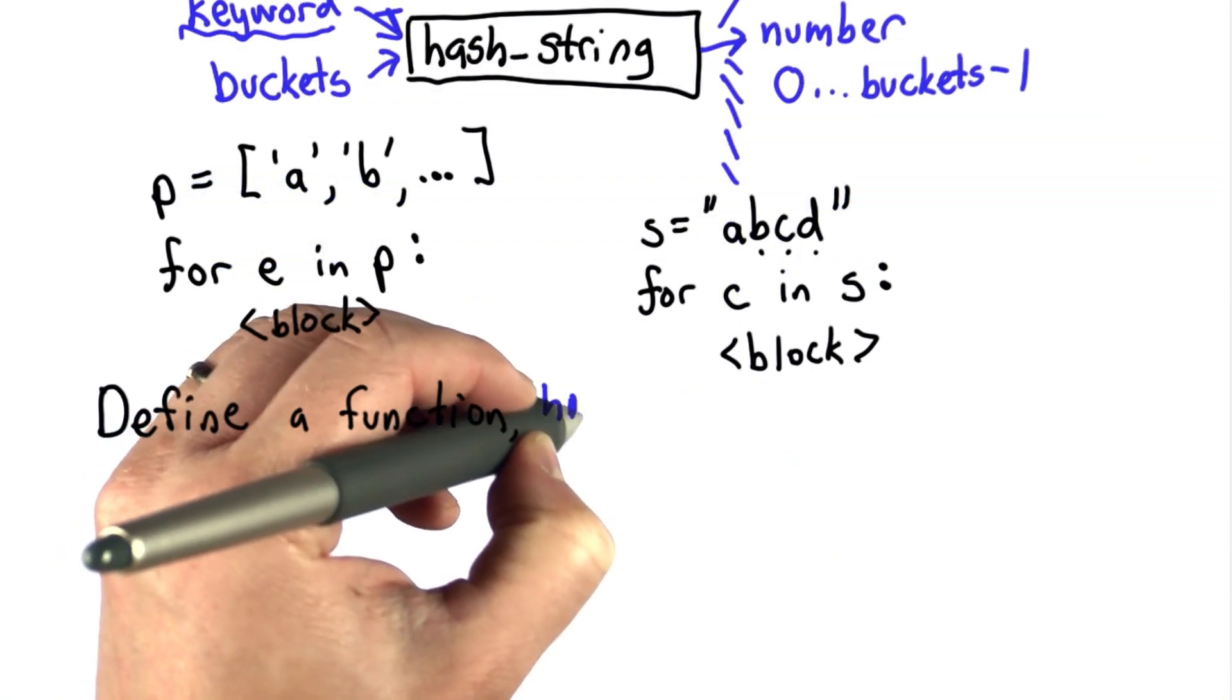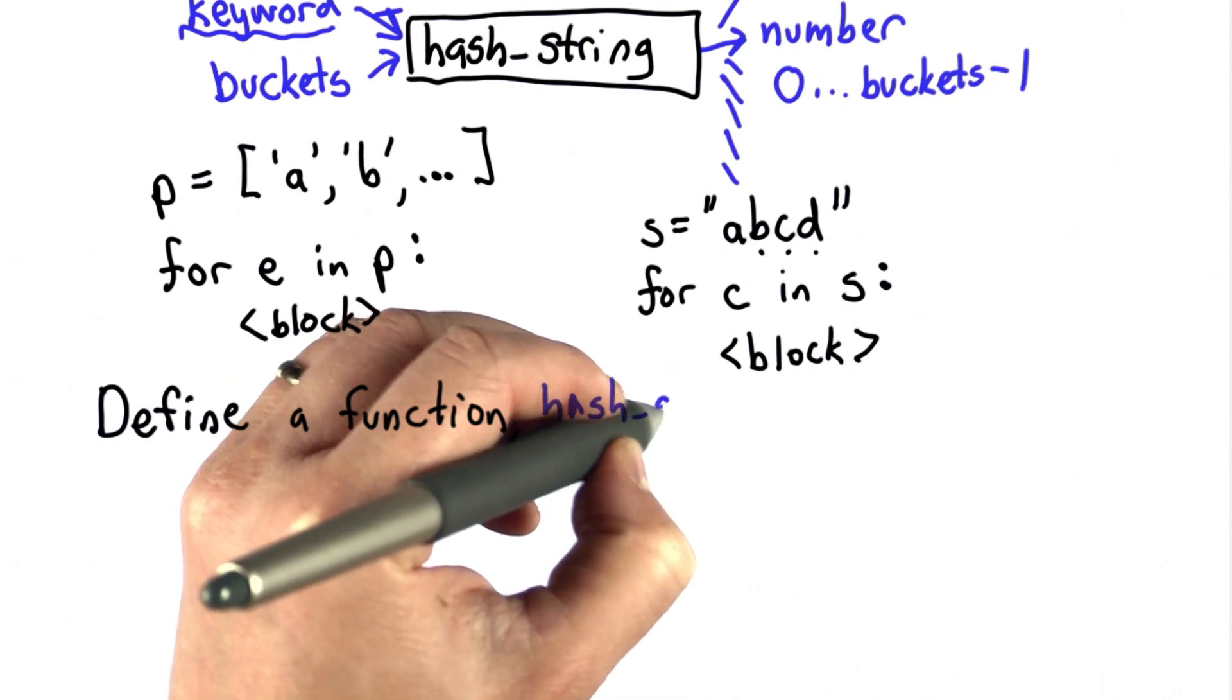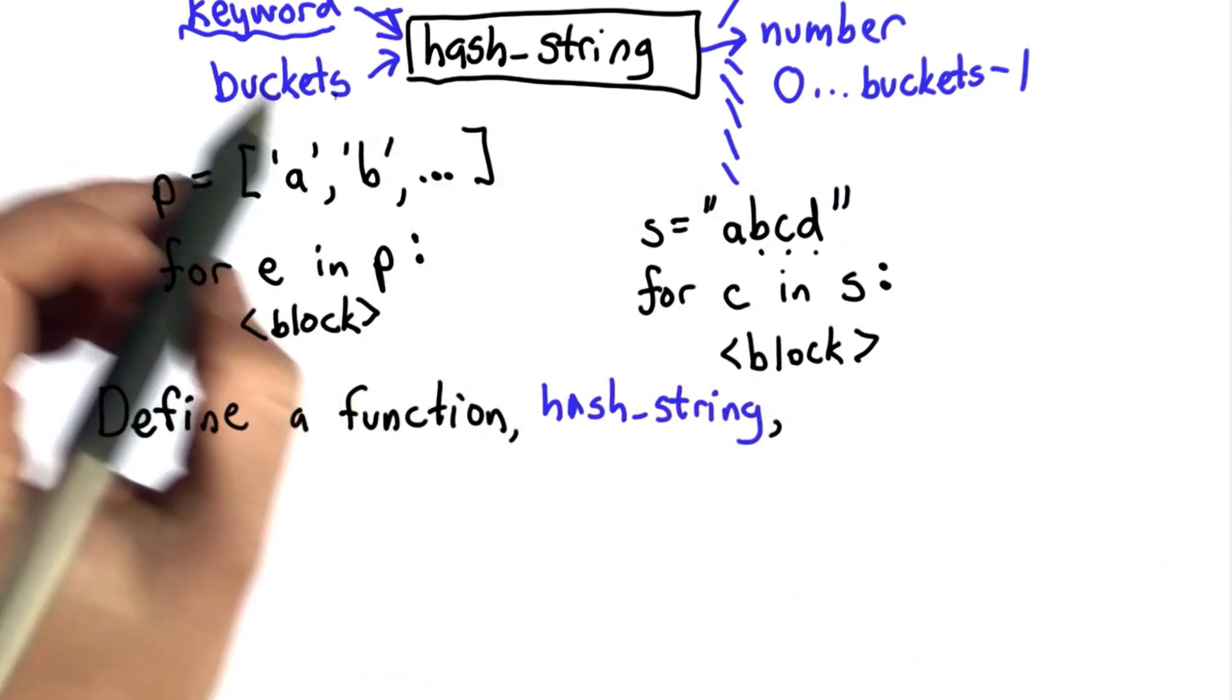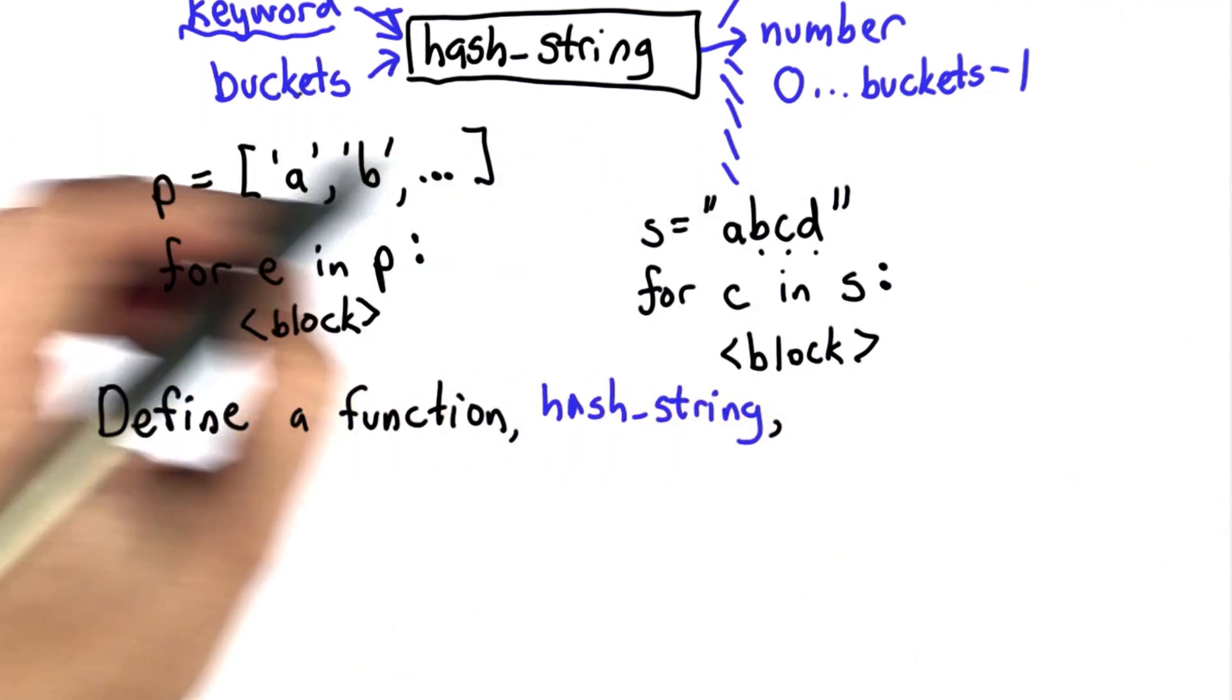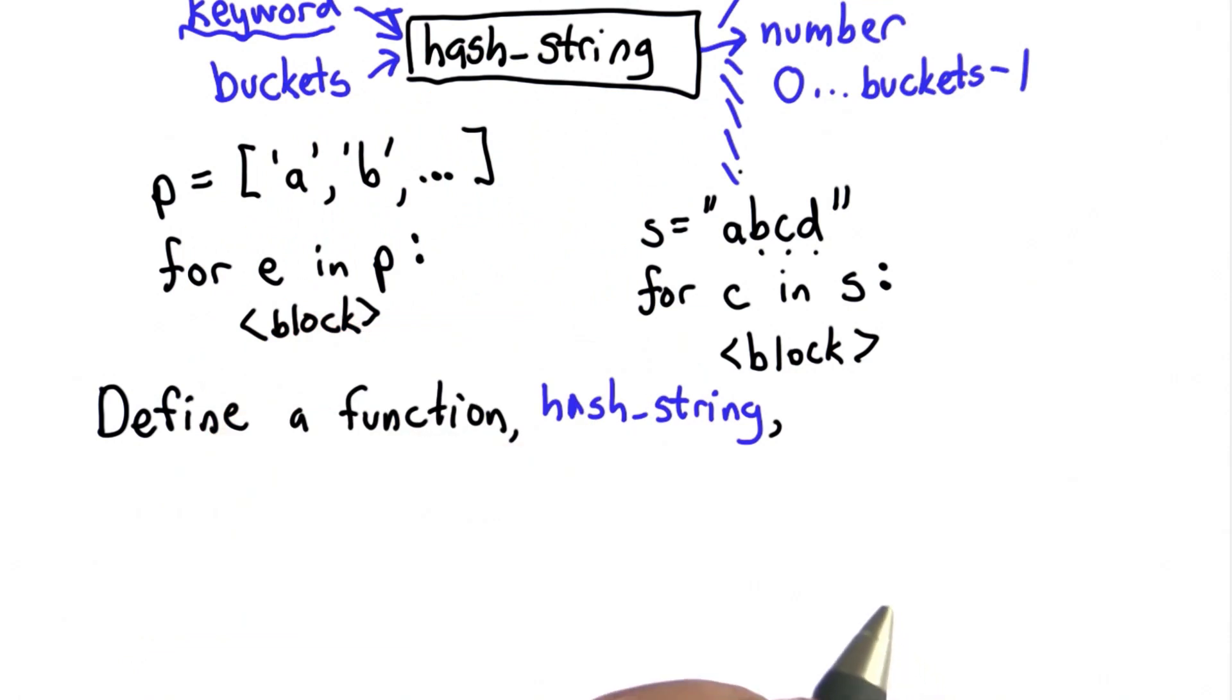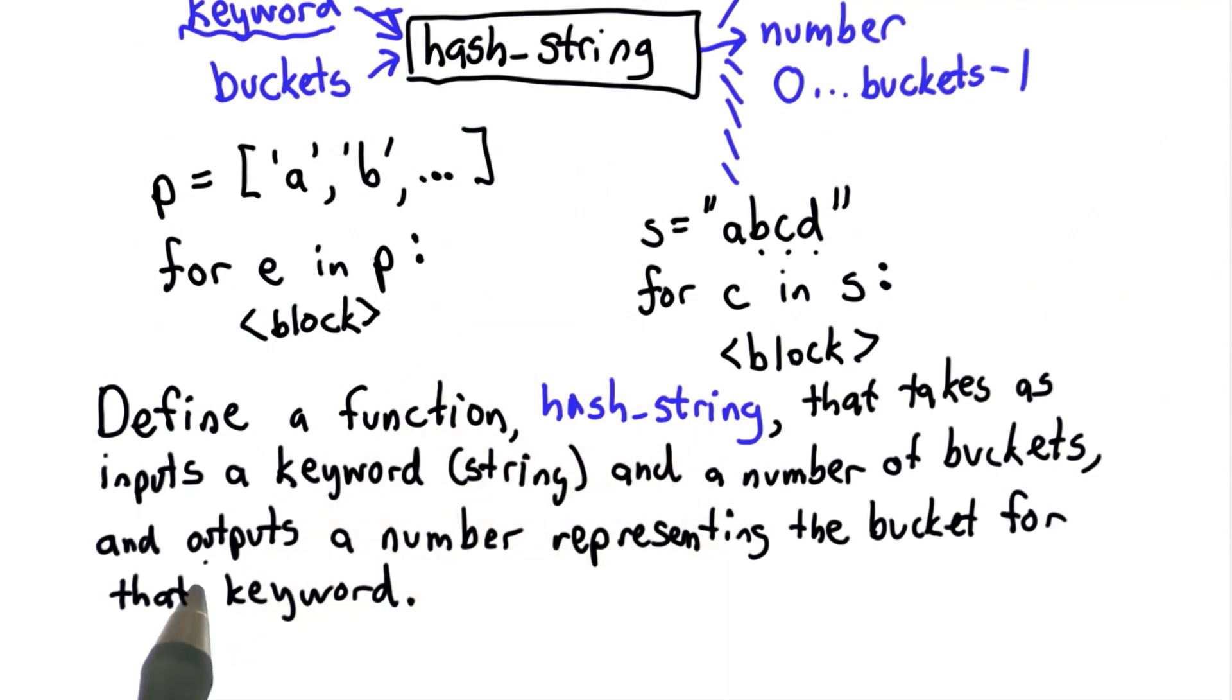For this quiz, your goal is to define a function hash_string that behaves like this. It takes a keyword, a number of buckets, and it gives a number identifying the bucket where that keyword will belong. But instead of just using the first letter in the keyword, it's going to use all the letters and produce as output a single number that represents the bucket where that keyword belongs.